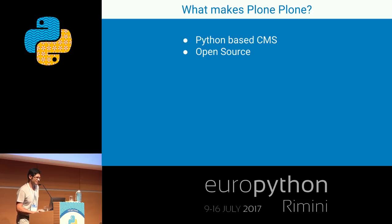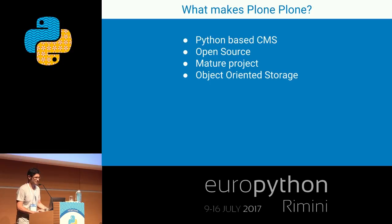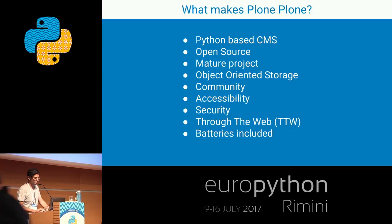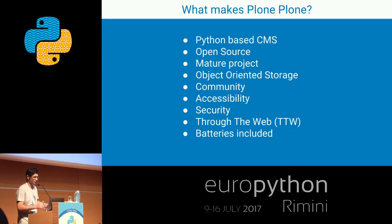Plone is a Python-based CMS. It's open source and a very mature project. It uses an object-oriented database and has a vast community. It cares a lot about accessibility and security. It also allows you to do a lot of through-the-web stuff and has a lot of features. Like Python, it has batteries included.